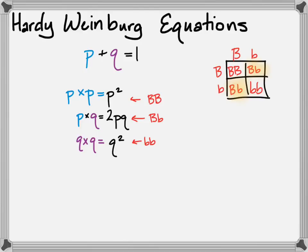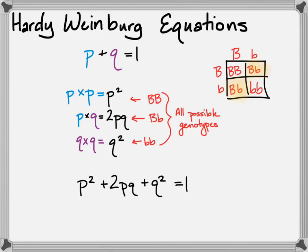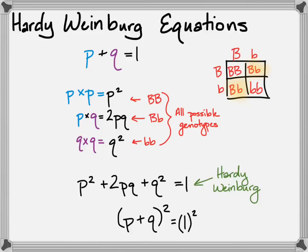P squared represents homozygous dominant, 2PQ represents heterozygous, and Q squared represents homozygous recessive — together encompassing all individuals in the population, so they equal 1. You might notice this looks familiar: it's a factored polynomial. If you take P plus Q, squared, it factors out to P squared plus 2PQ plus Q squared equals 1. We've just taken P plus Q equals 1 and squared both sides, now representing both alleles and genotypes.